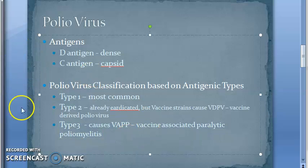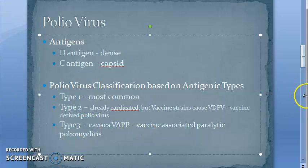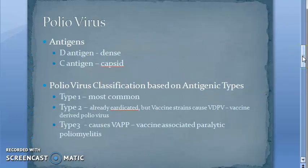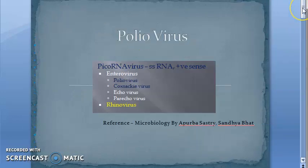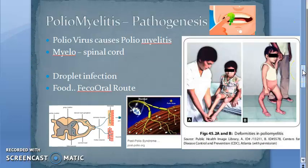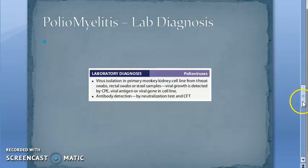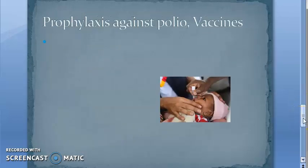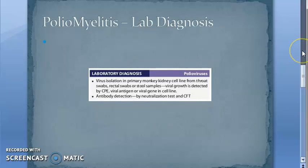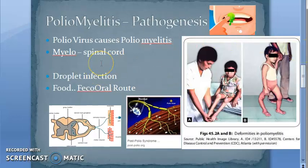In this video we have covered the structure of poliovirus and the antigens and classification based on antigenic types. In the next video we will start with the pathogenesis of poliomyelitis, followed by lab diagnosis and immunoprophylaxis — the vaccines.